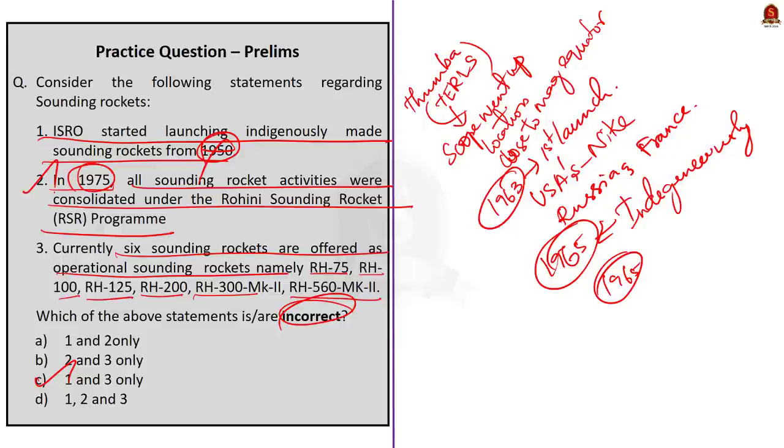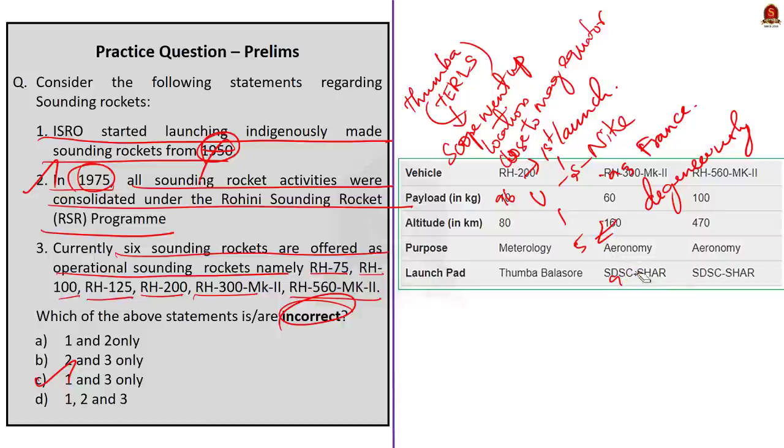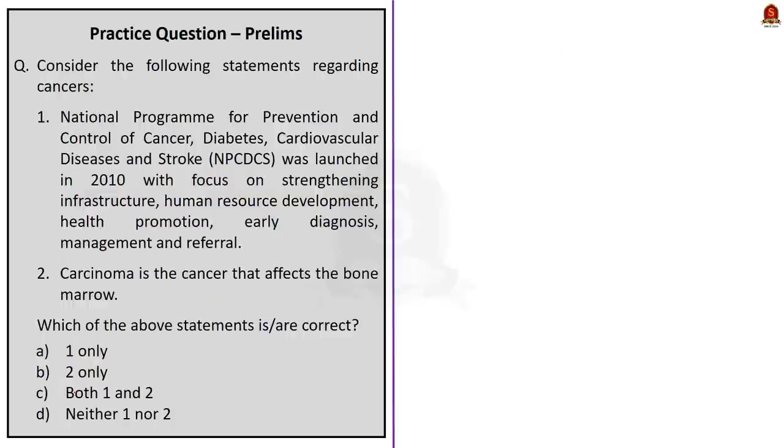And once experience is gained the ISRO launched its own version Rohini RH 75 in 1965. So the year is wrong here. It is not 1950 itself. Now statement 2 is correct because in 1975 all sounding rocket activities were consolidated under the Rohini sounding rockets that is RSR program. So this statement is actually correct. Now the third statement is incorrect. Because RH 75 with a diameter of 75 mm was the first truly Indian sounding rocket which was followed by RH 100 and RH 125 rockets. But currently three versions are offered as operational sounding rockets. The information is given here in the table. So the correct answer for the question is option C 1 and 3 only.